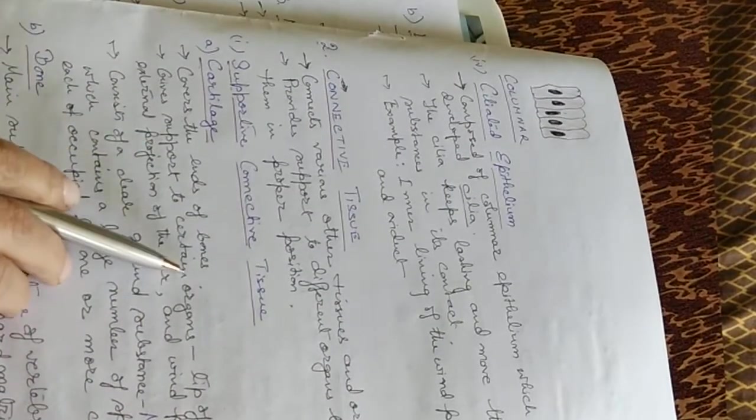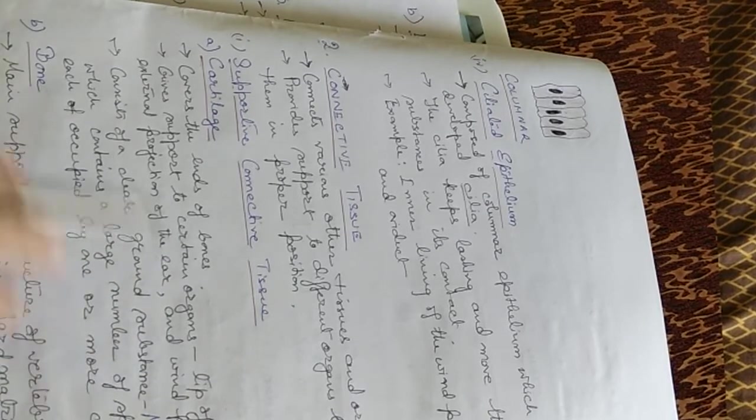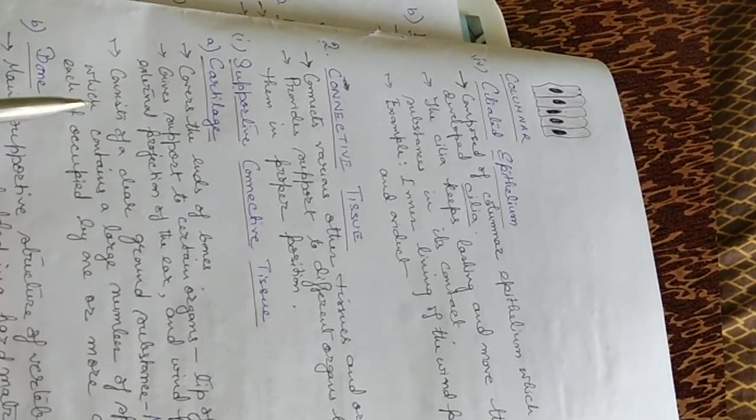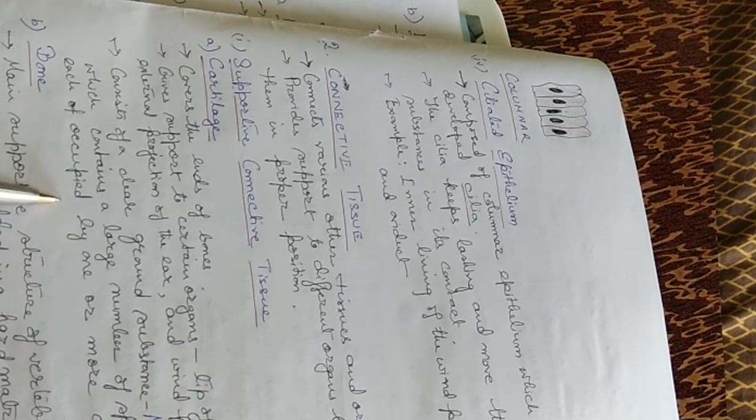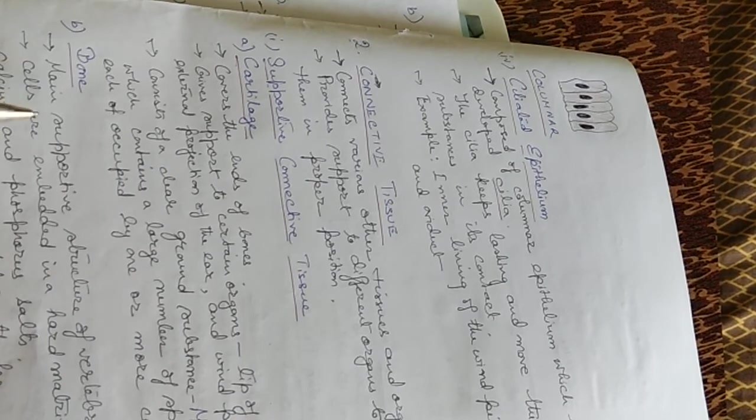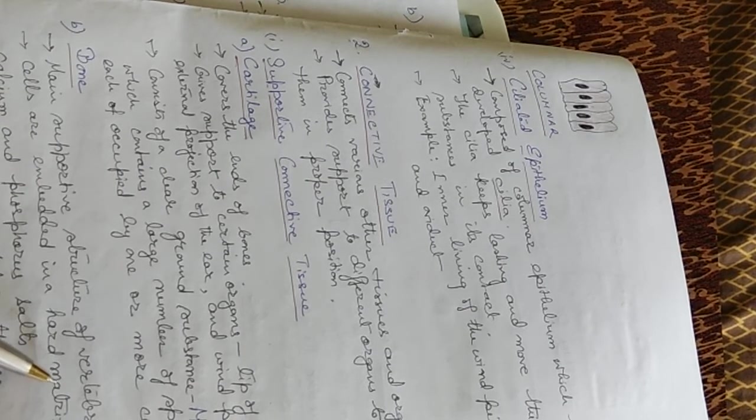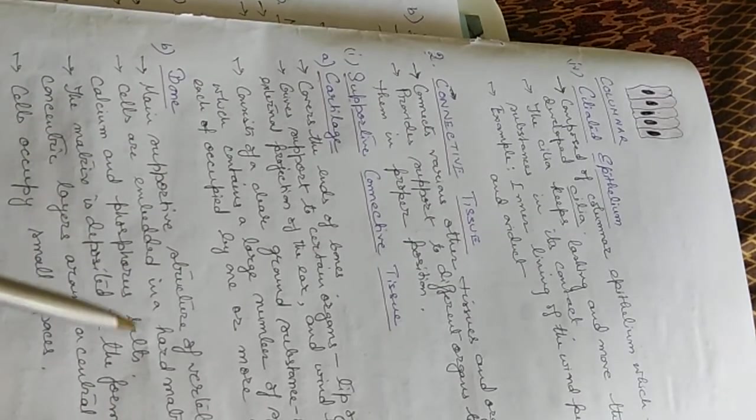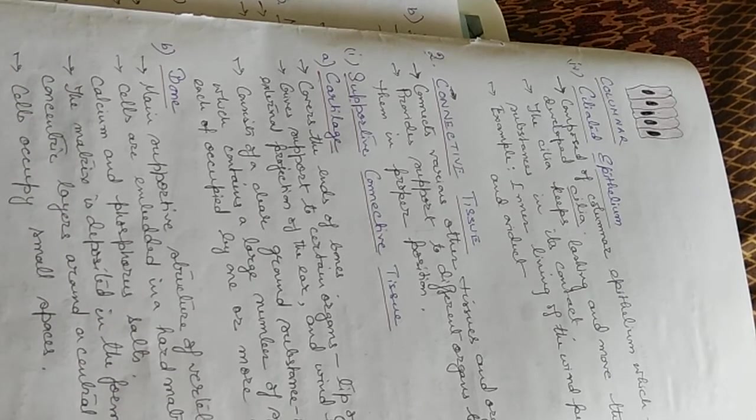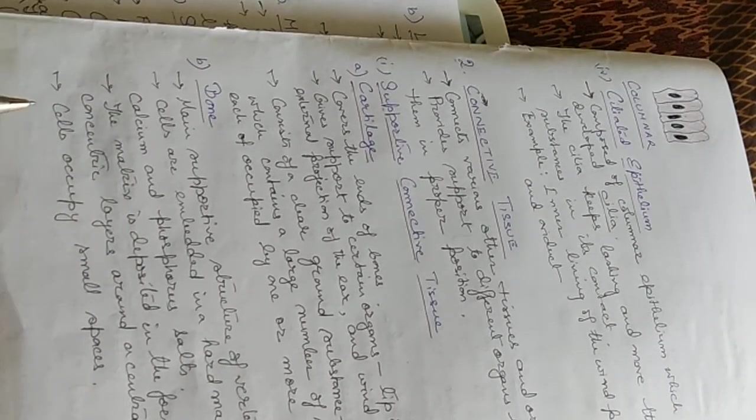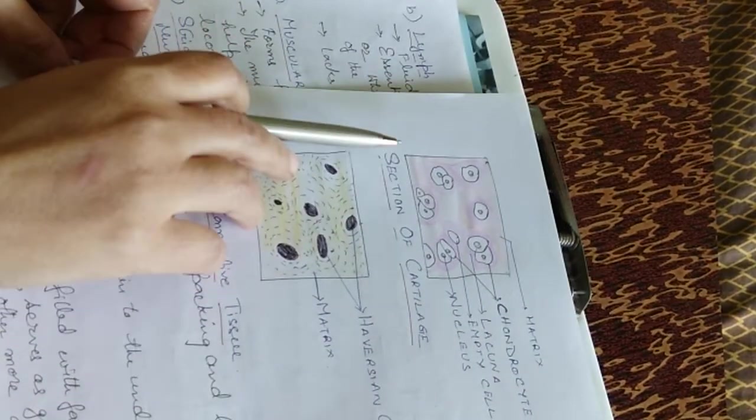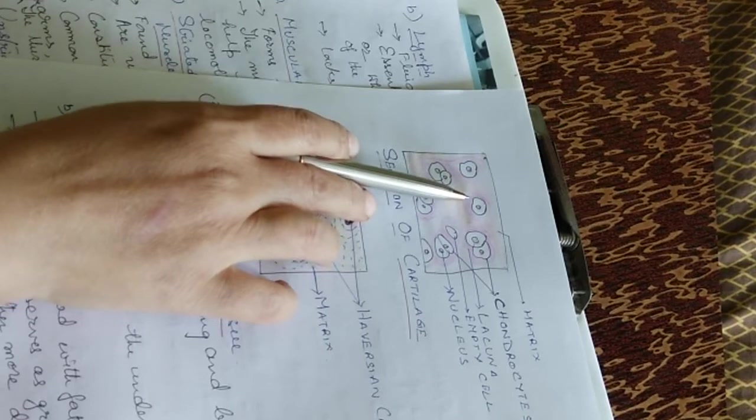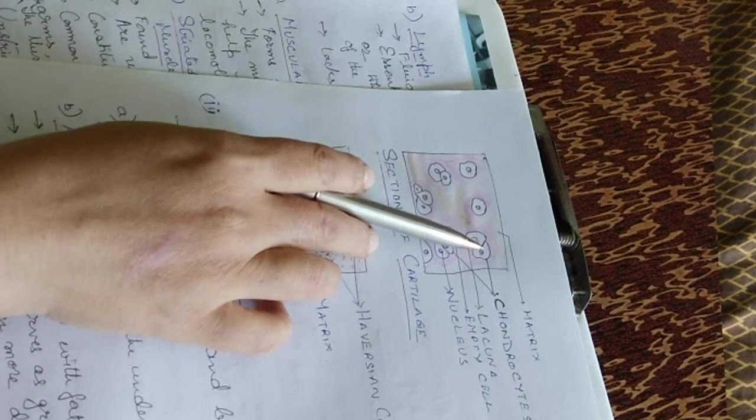Cartilage covers the ends of the bones. They give support to certain organs: tip of the nose, external projection of the ear, and windpipe. They consist of a clear ground substance, the matrix, which contains a large number of spaces, each occupied by one or more cells. This is the cartilage. This is the matrix. You can see these are the cartilage cells, they are called chondrocytes.